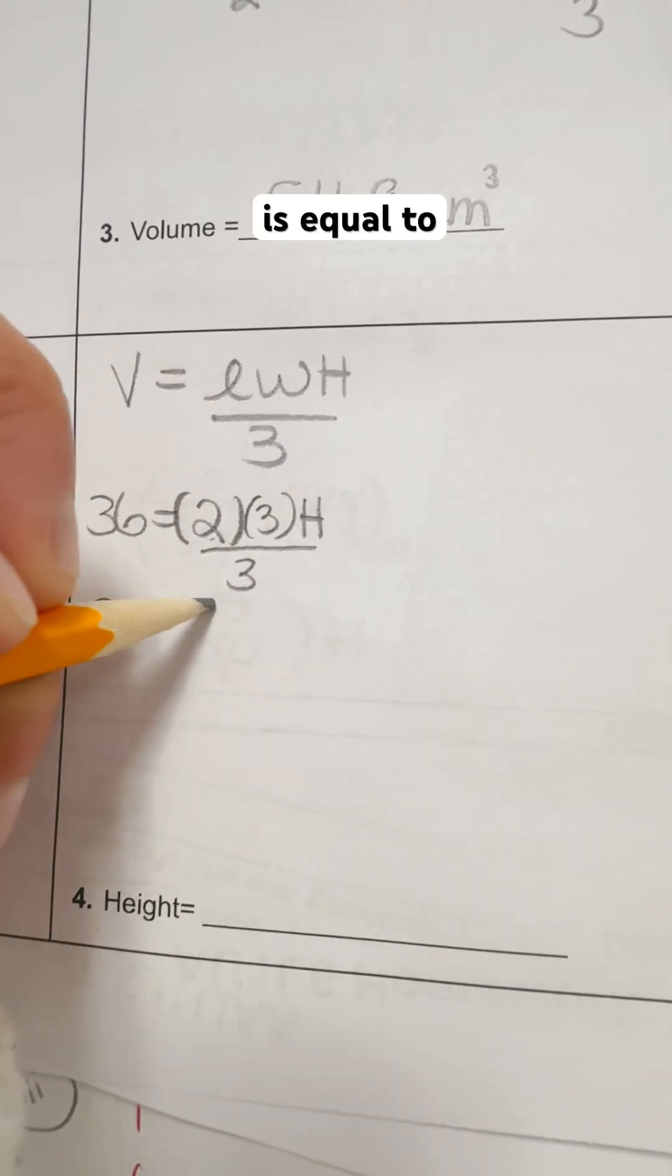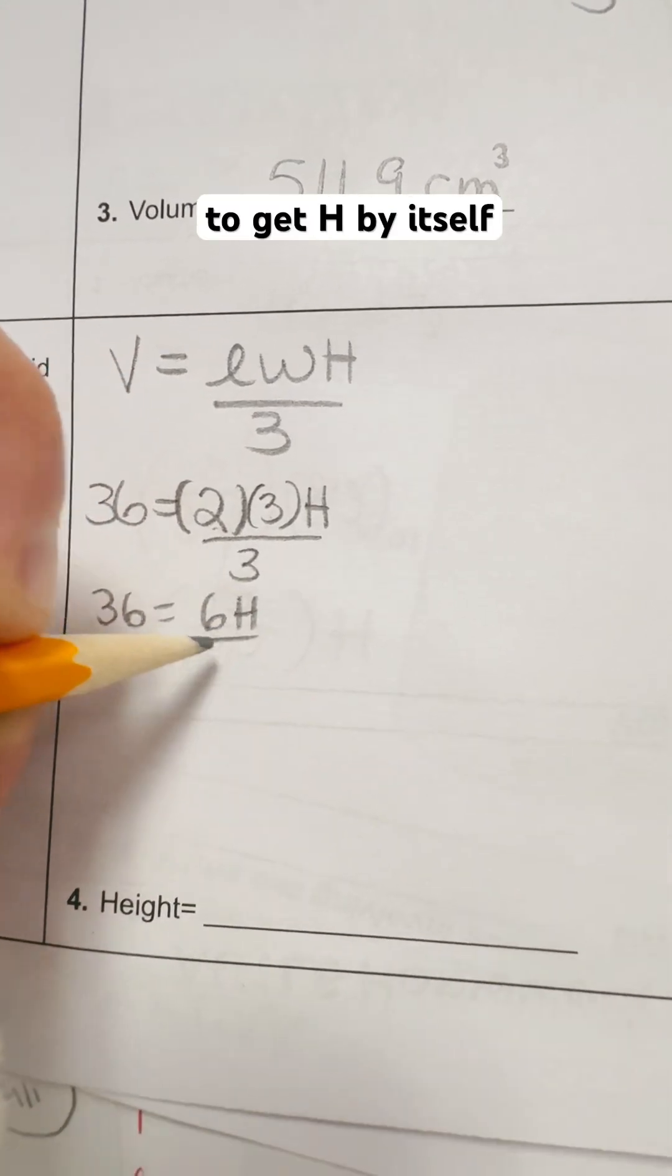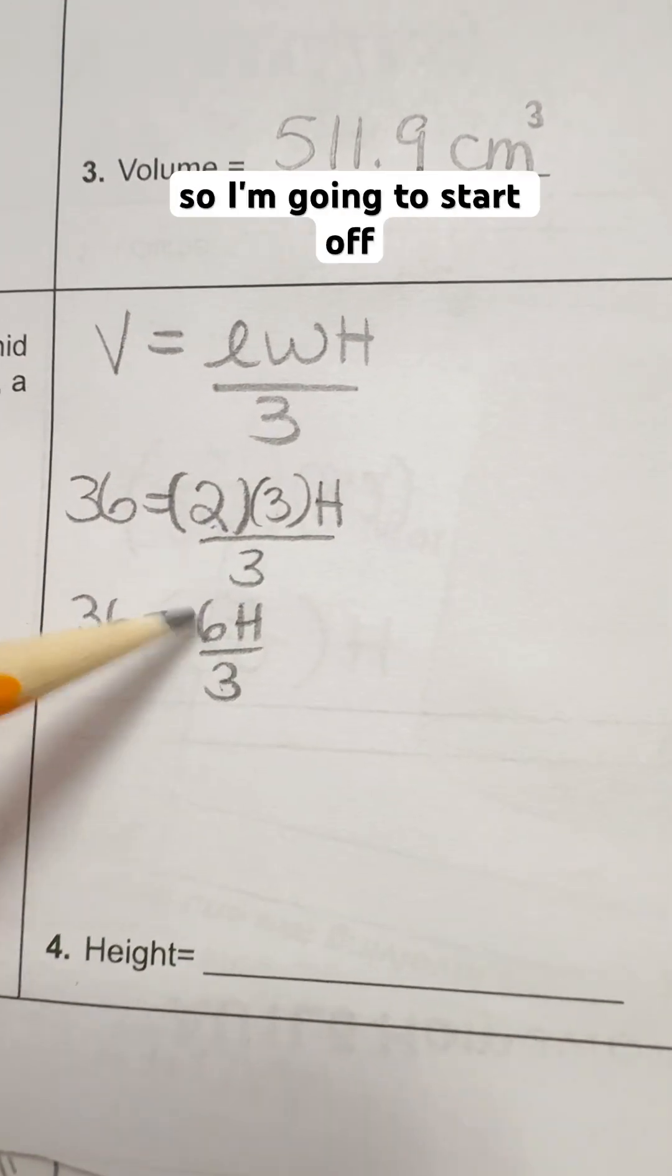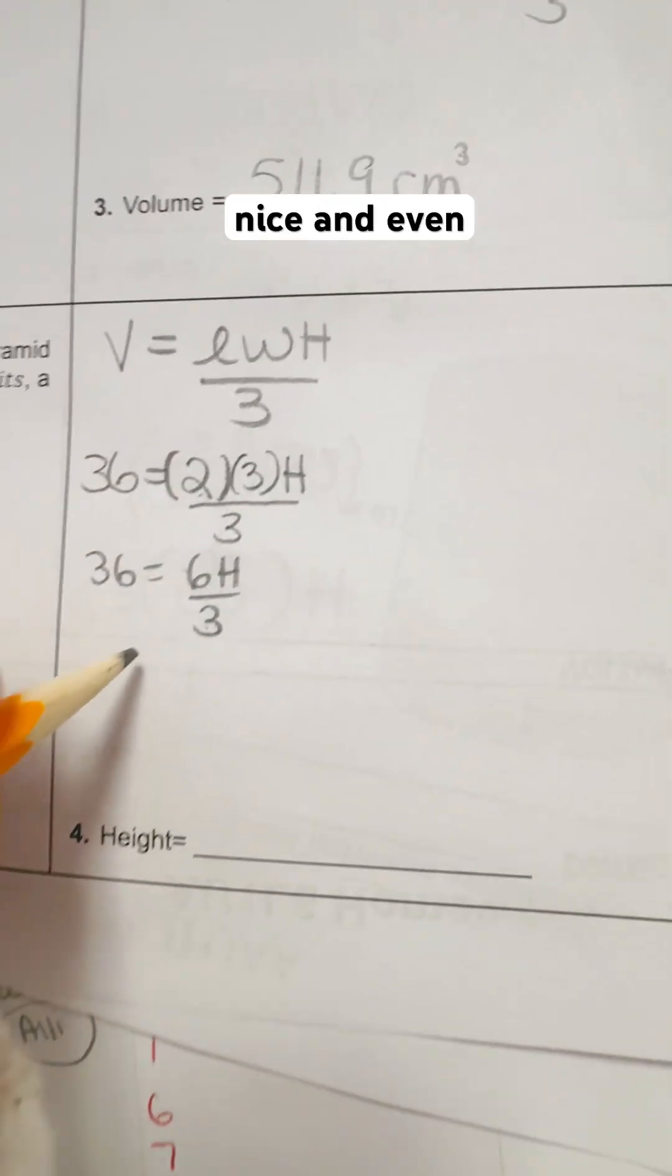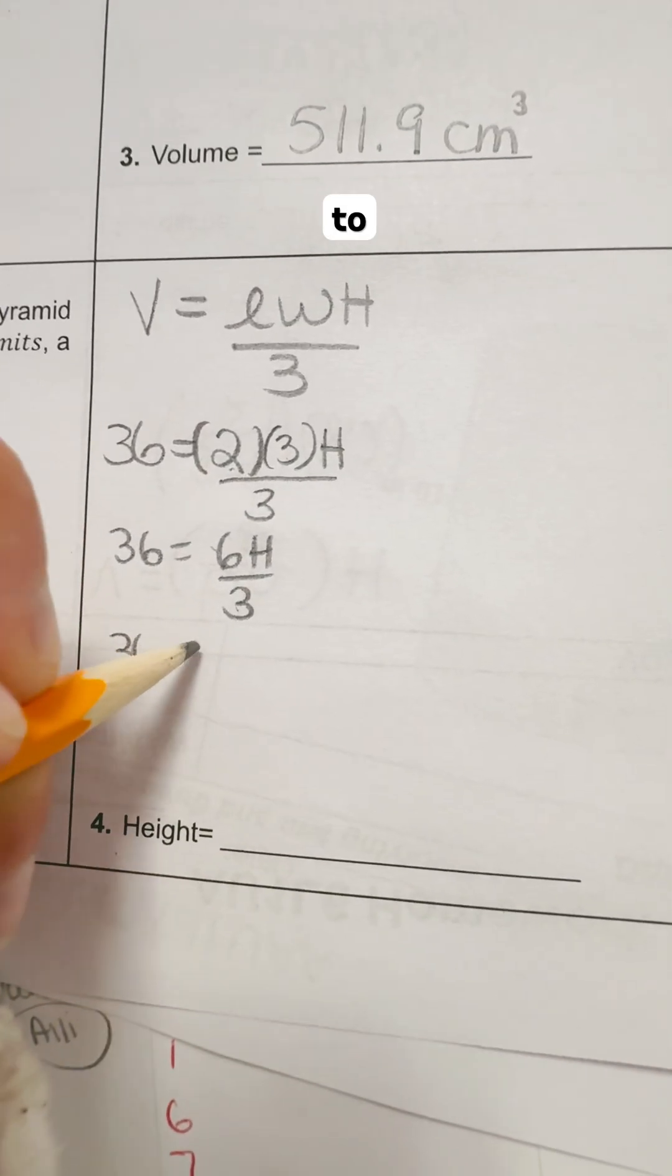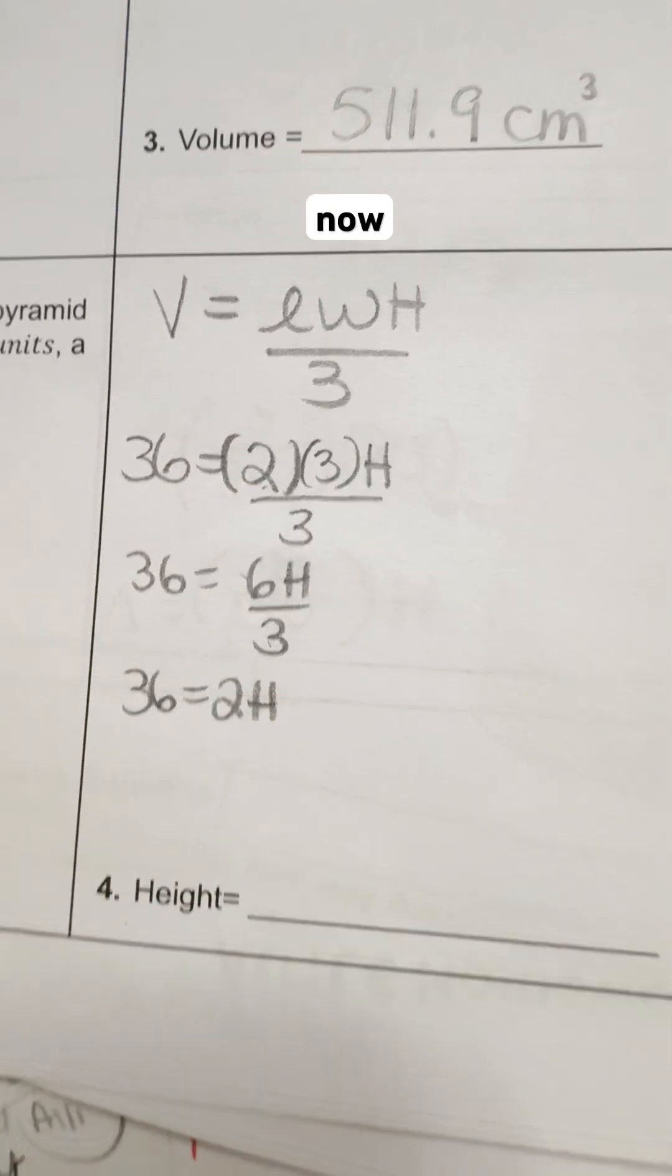So we've got 36 is equal to 6 times H divided by 3. We can divide the two numbers: 6 divided by 3 because it goes in nice and even. So we've got 36 is equal to 2 now times H.